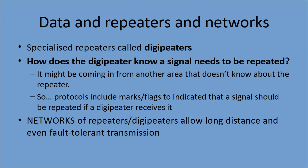How does a digipeater know that a signal needs to be repeated? When we covered repeaters in other lessons, we talked about CTCSS signals. A signal might be coming from another area that doesn't know about the repeater and doesn't want to be repeated. So protocols for data will include marks, flags, and other indicators to show that a signal should be repeated when a digipeater receives it. There are networks of repeaters and digipeaters that allow long-distance and even fault-tolerant transmission, with protocols to repeat transmissions if they're not acknowledged, and sequence numbers to make sure everything comes out complete at the other end.